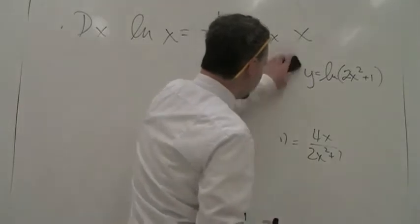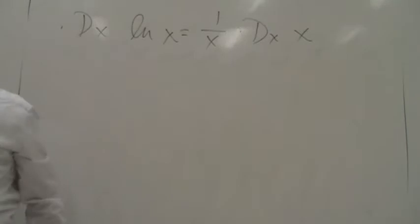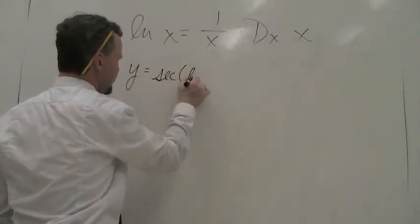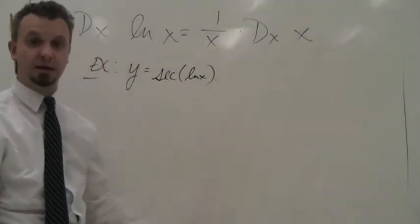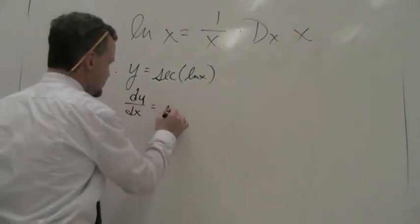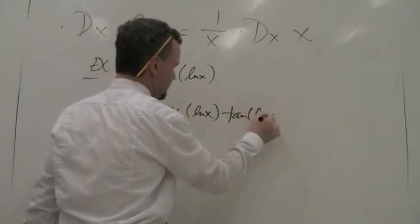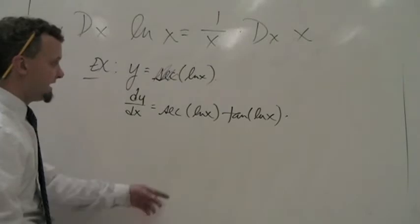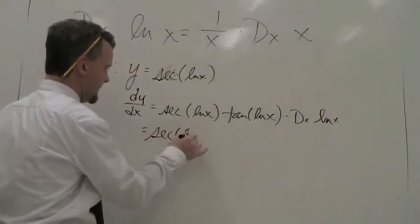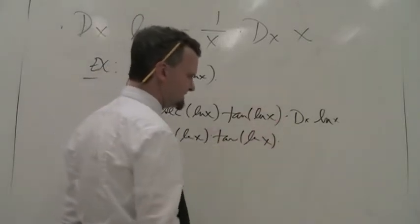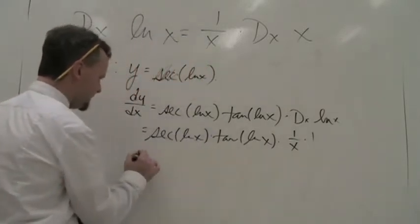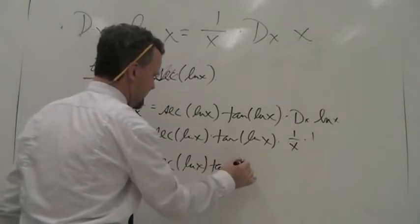We're going to practice a few more problems and also do some applications from chapter 3. What if I asked you to derive y equals the secant of the natural log of x? Well, this isn't the natural log of something — it's the secant of something. The derivative of secant blah is secant blah times tangent blah, times the derivative of ln x. The derivative of ln x is 1 over x. So our final answer is secant(ln x) tangent(ln x) all over x.